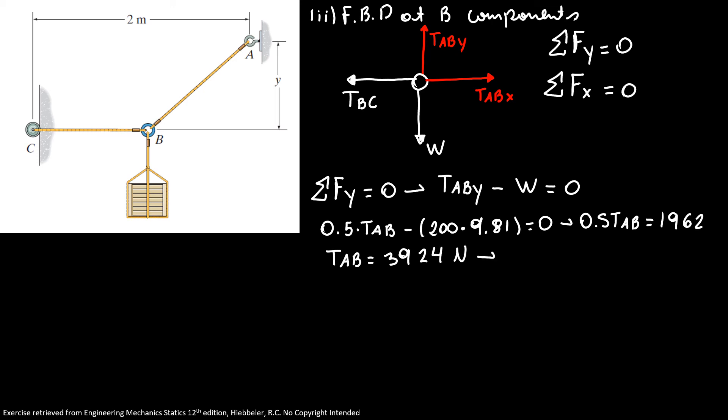If you want to convert, you can write your tension AB equals 3.92 kilonewtons. It's the same answer.